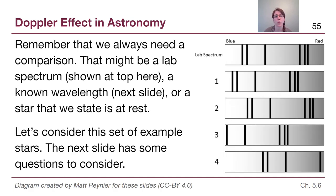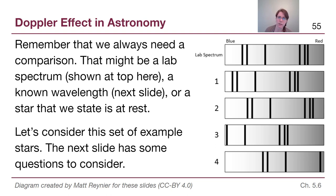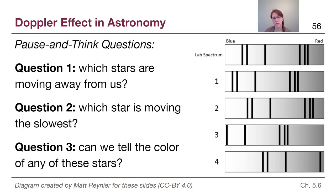Let's start with a couple of example stars. We are looking at a set of four stars compared to a laboratory spectrum and where we see this pattern of lines. This is somewhat simplified — the pattern doesn't all shift the same way — but for our purposes we'll think about it that way, just as we did with the galaxy spectrum from a couple of slides ago. I'm going to put up three questions and I'd like you to pause the video and think through your answers before we go through them.